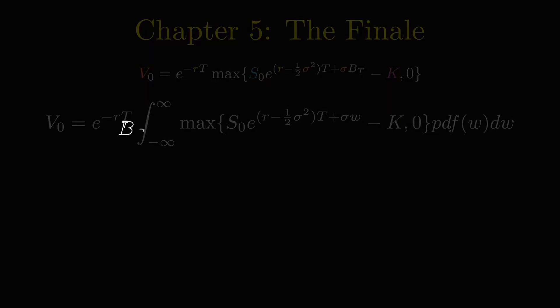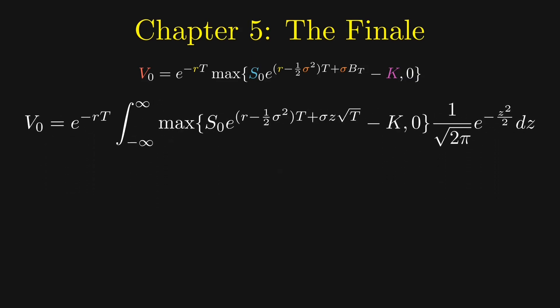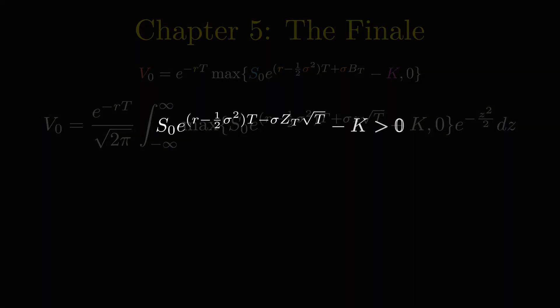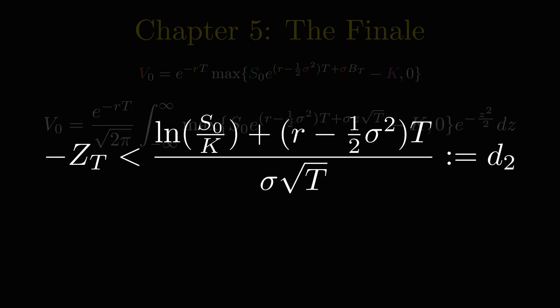To simplify things, let's convert B_T into a standard normal variable by dividing by the square root of T. Next, we find the region where the integral is non-zero, that is, the payoff is greater than zero. We get a lower bound for Z_T. As we want to integrate from negative infinity to match the definition of the cumulative distribution function, we negate both sides to get an upper bound for negative Z_T. Let's label this upper bound d_2.